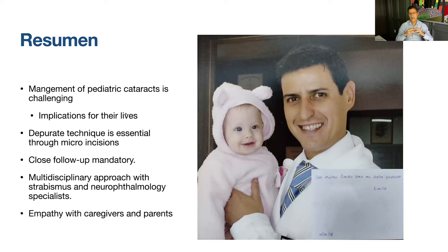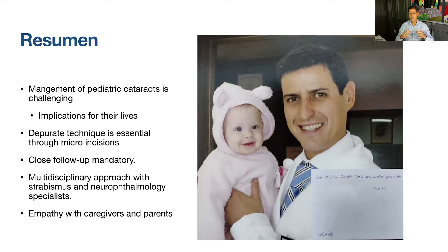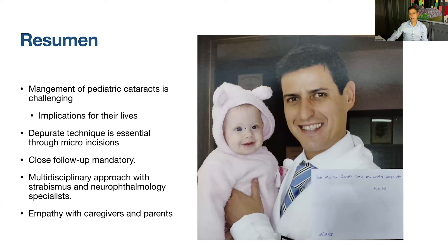The most important thing is having empathy with the caregivers and parents. Let them know what to expect and give them confidence. Remember these are generally young parents, very anxious because they've been told their child needs surgery at a very young age. Give them confidence that the prognosis is very good, but that it implies a lot of effort from them and from us in the visual rehabilitation. I show a picture of a baby from Peru who came to my institution with a unilateral cataract — I implanted a lens and the parents gave me this beautiful picture of her. I keep it in my office as a reminder that we can have a huge impact on the lives of these children.